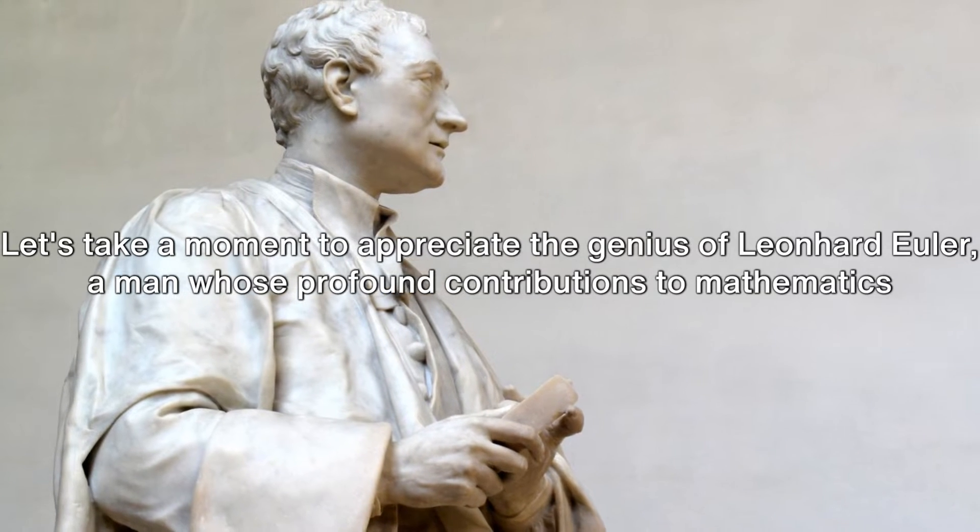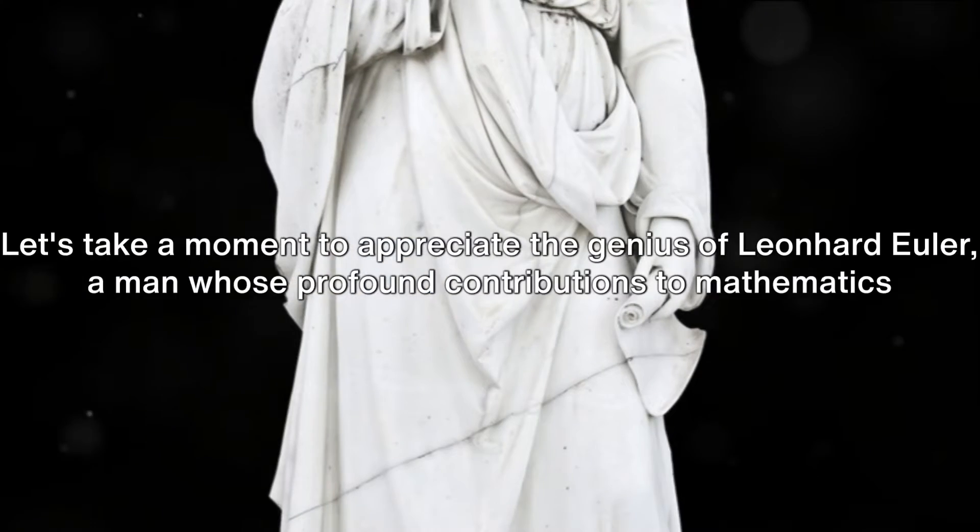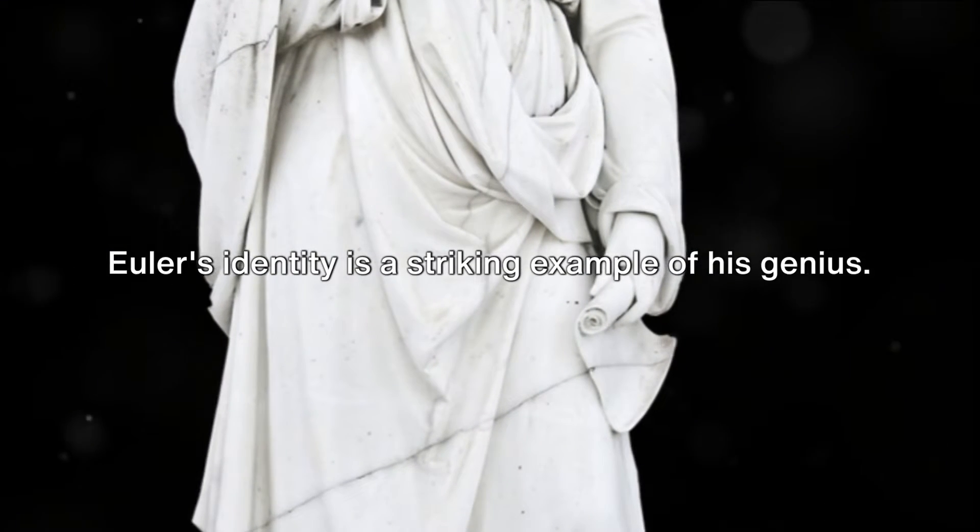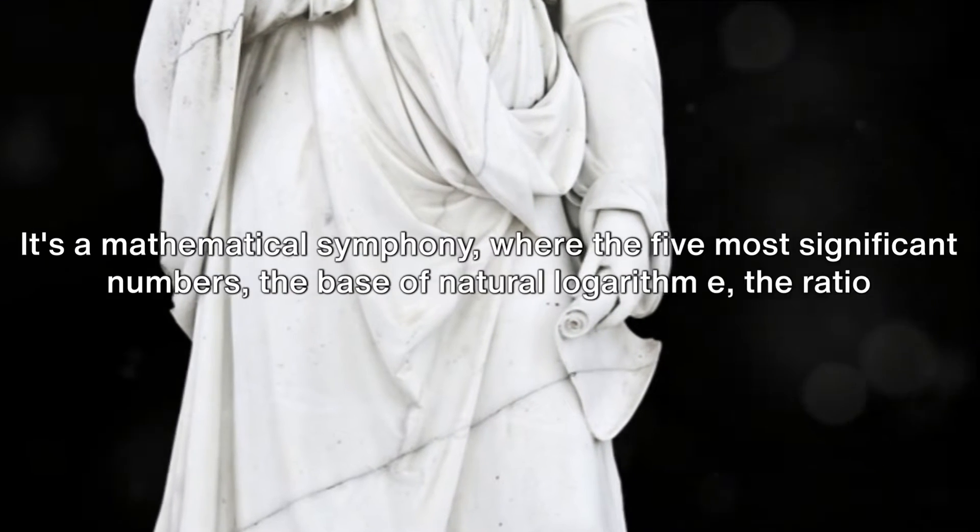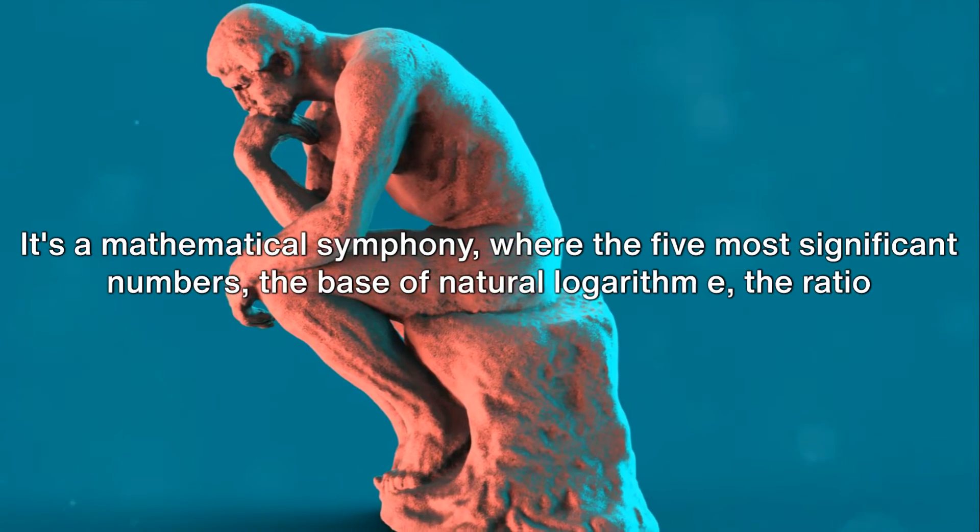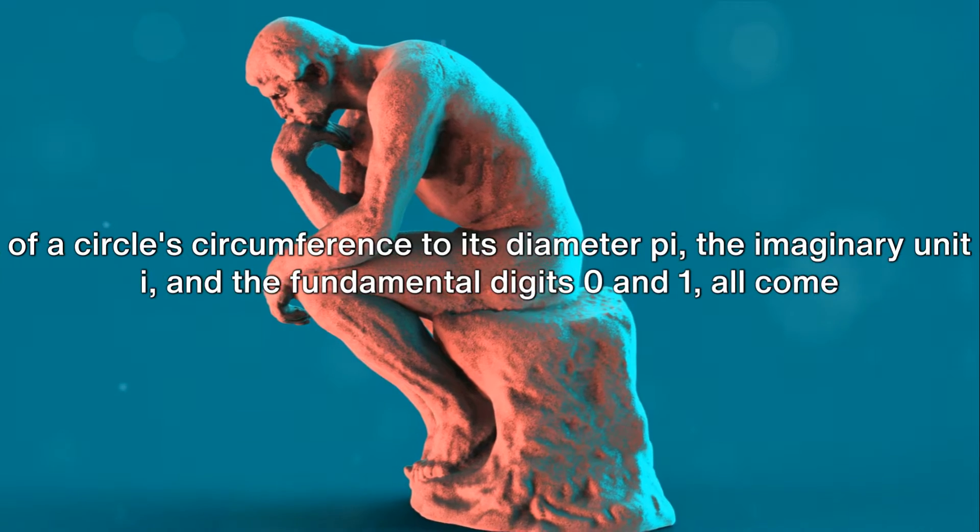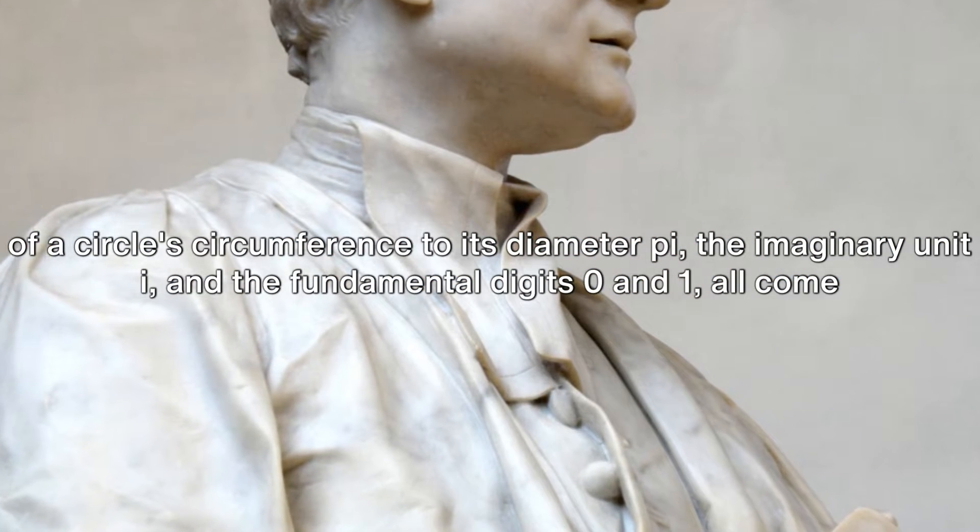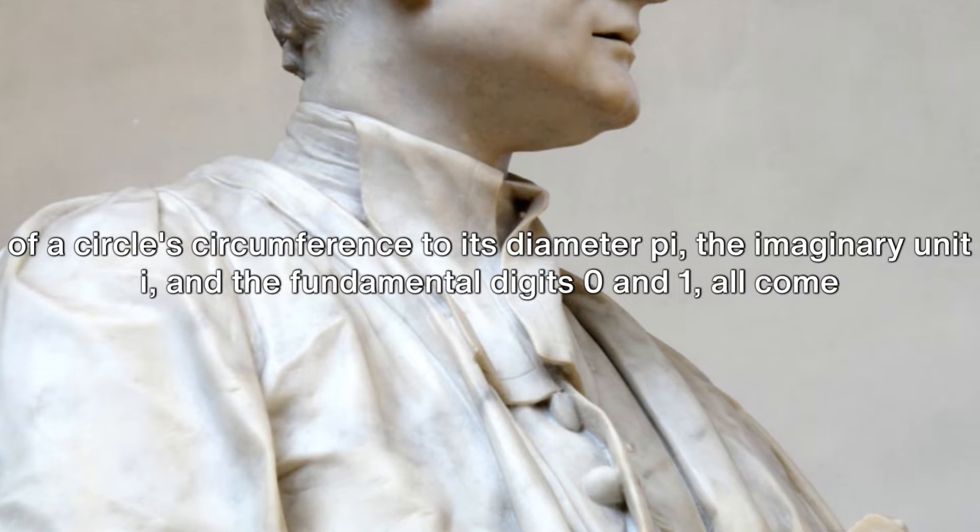Let's take a moment to appreciate the genius of Leonhard Euler, a man whose profound contributions to mathematics continue to inspire. Euler's identity is a striking example of his genius. It's a mathematical symphony where the five most significant numbers—the base of natural logarithm e, the ratio of a circle's circumference to its diameter pi, the imaginary unit i, and the fundamental digits zero and one—all come together in perfect harmony.